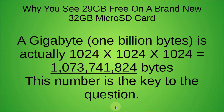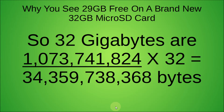A gigabyte — 1 billion bytes — is actually 1,024 times 1,024 times 1,024, which is 1,073,741,824 bytes. This number is key to this question. So 32 binary gigabytes is 1,073,741,824 times 32, which equals 34,359,738,368 bytes.